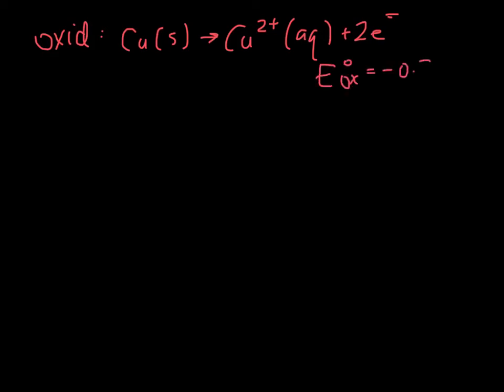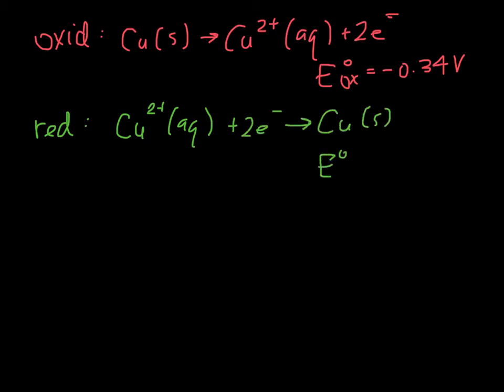We can first consider what's happening for the oxidation half reaction at the anode. So we have copper solid going to Cu2+ plus 2 electrons. And as an oxidation reaction, this has a potential of negative 0.34 volts. The reduction half reaction is Cu2+ plus 2 electrons going to copper solid, and this has a reduction half reaction of 0.34 volts.